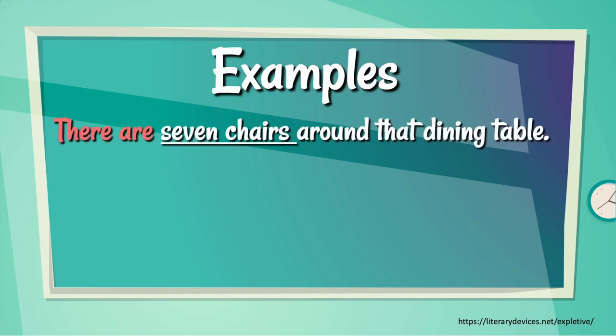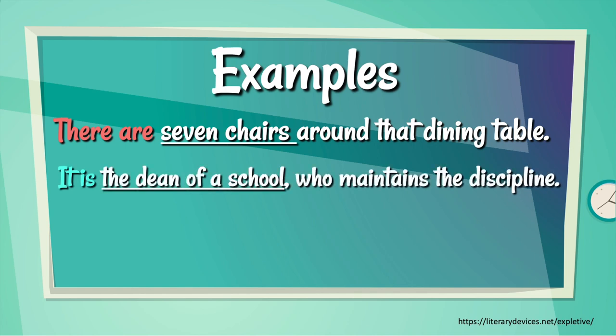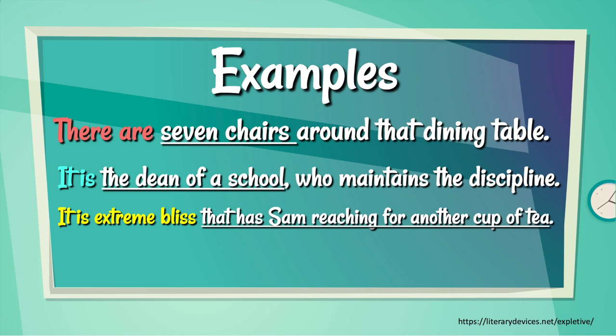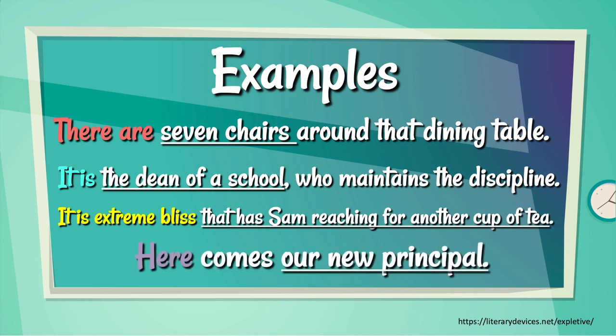So let's take a look at some examples. There are seven chairs around that dining table. It is the dean of the school who maintains the discipline. It is extreme bliss that has some reaching for another cup of tea. Here comes our new principal.